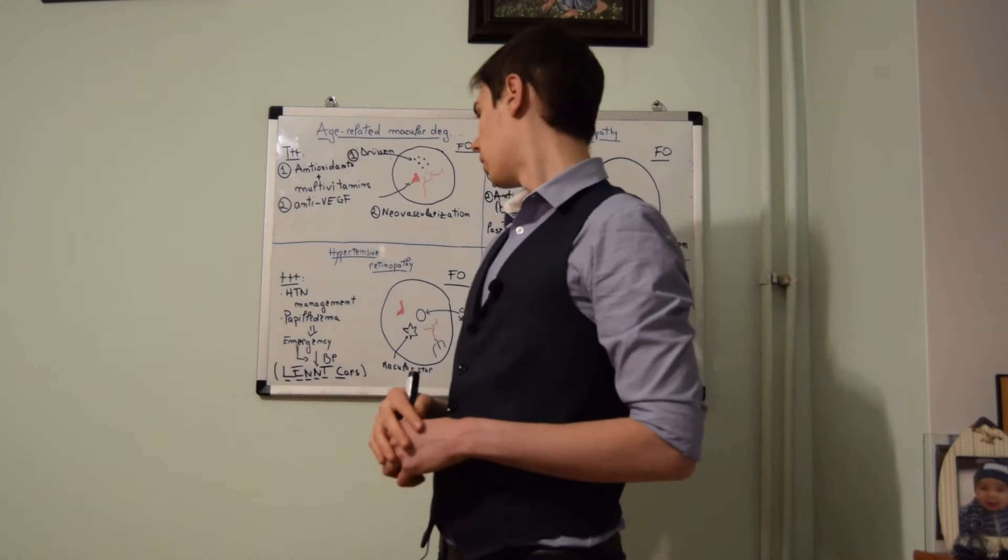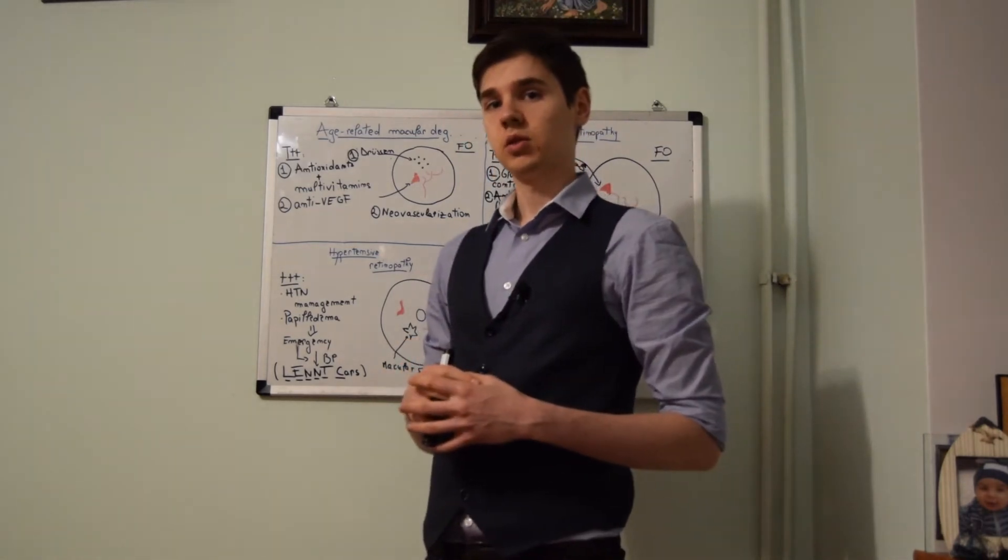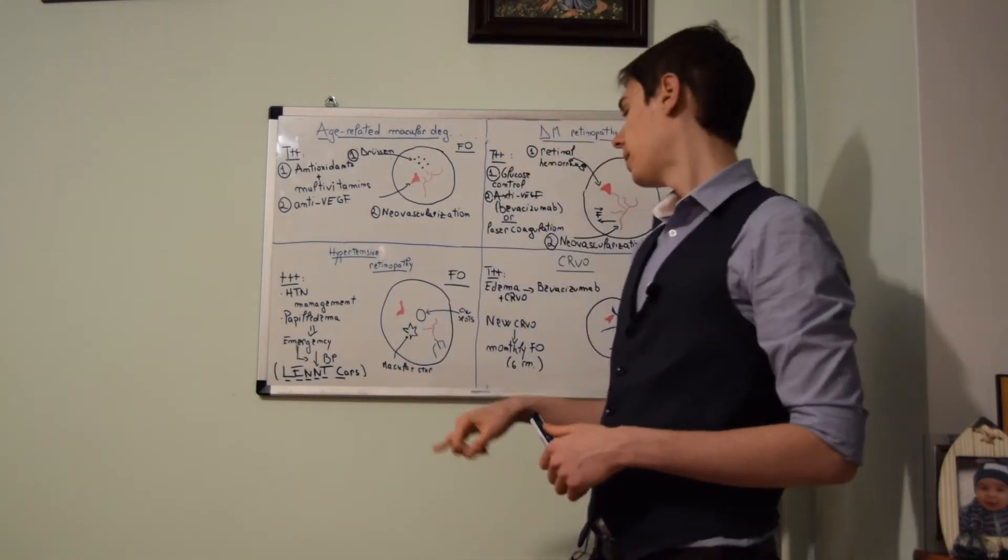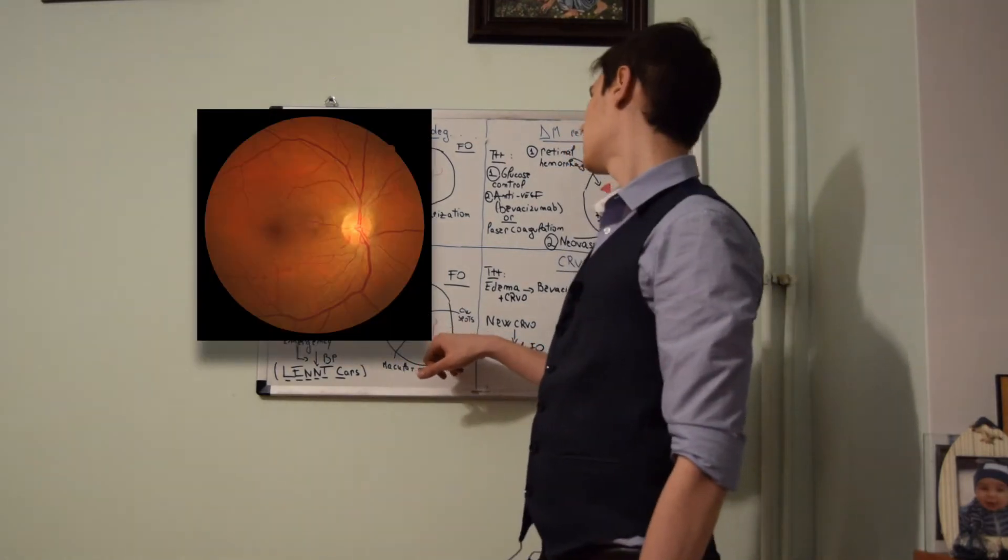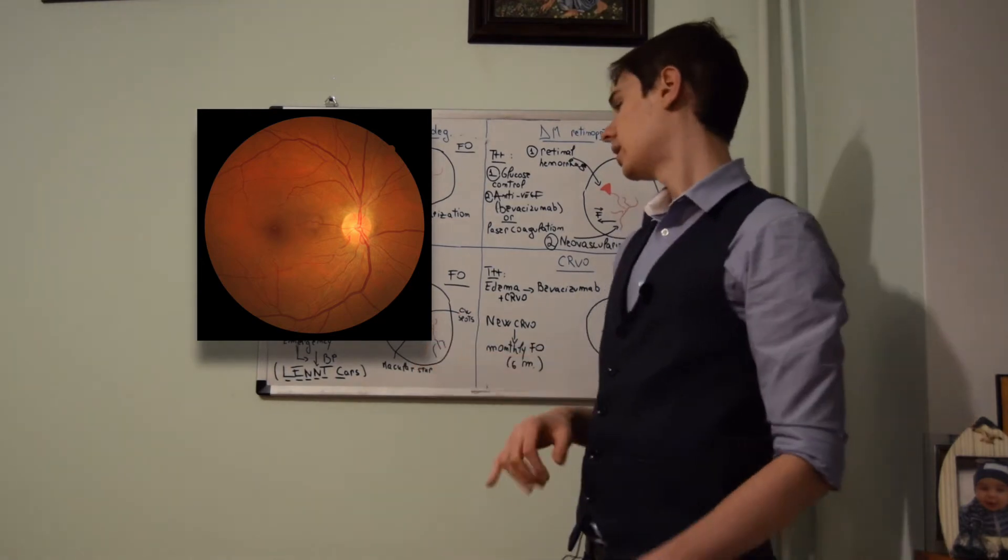Other signs of hypertensive retinopathy are a macular star. Lastly, as we can see here, is an arteriovenous nicking process.